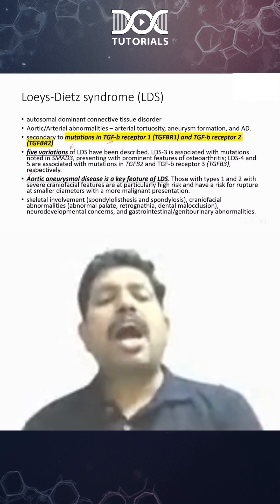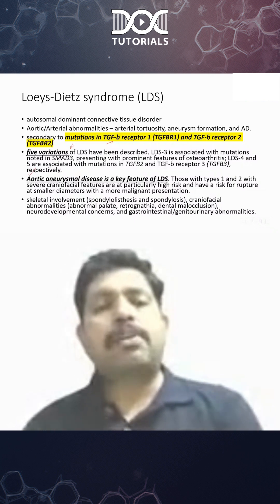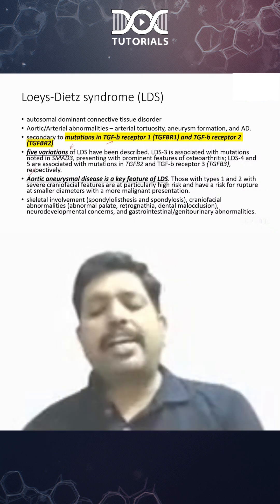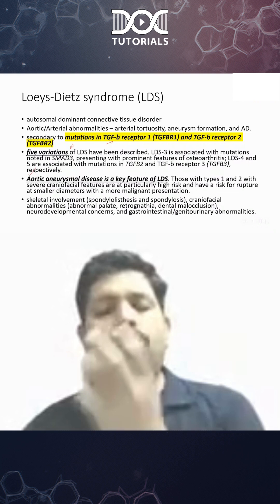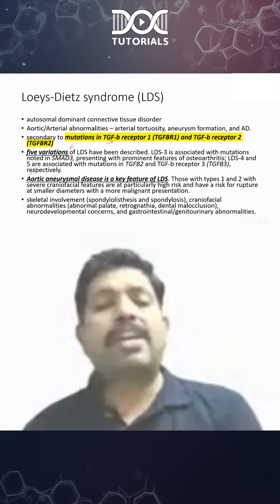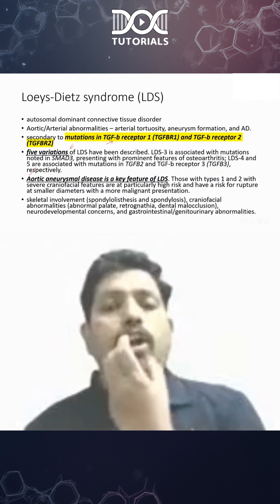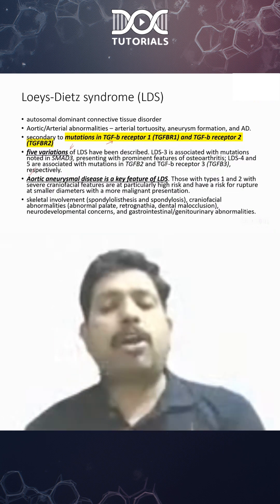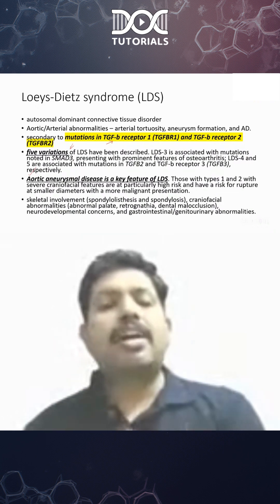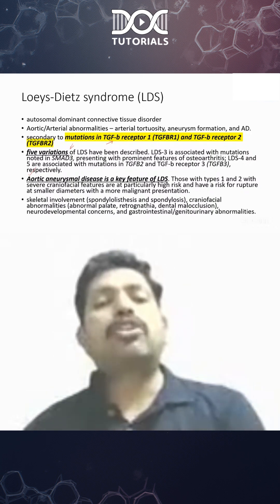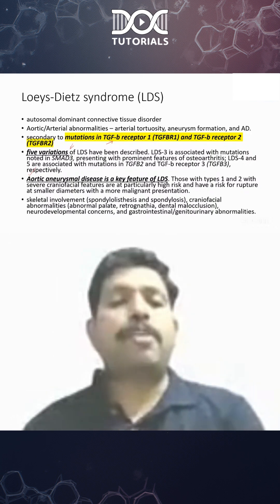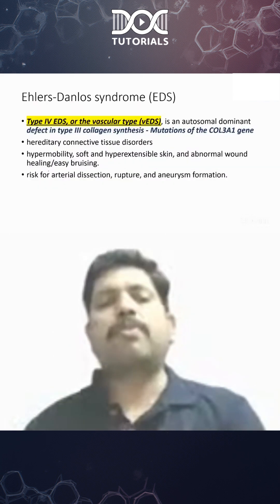Very, very, very important: there are multiple craniofacial abnormalities — small retrognathia, the face will be small. If somebody gives you a picture of a small face, retrognathia, dental malocclusion, craniofacial malocclusion, and an aortic abnormality, then you should think of Loeys-Dietz syndrome. Just remember this for your image-based questions.